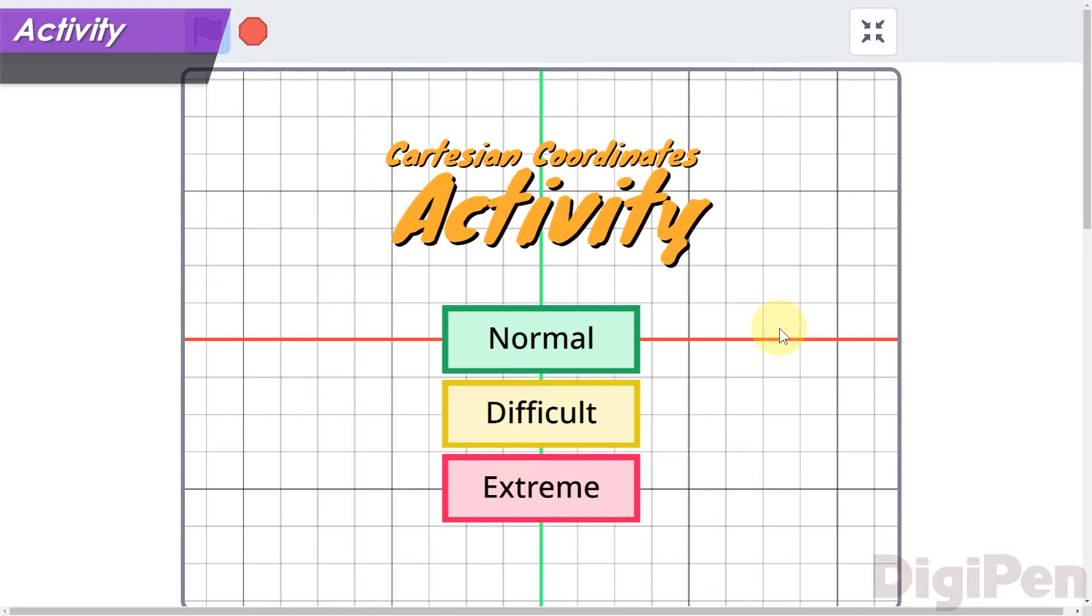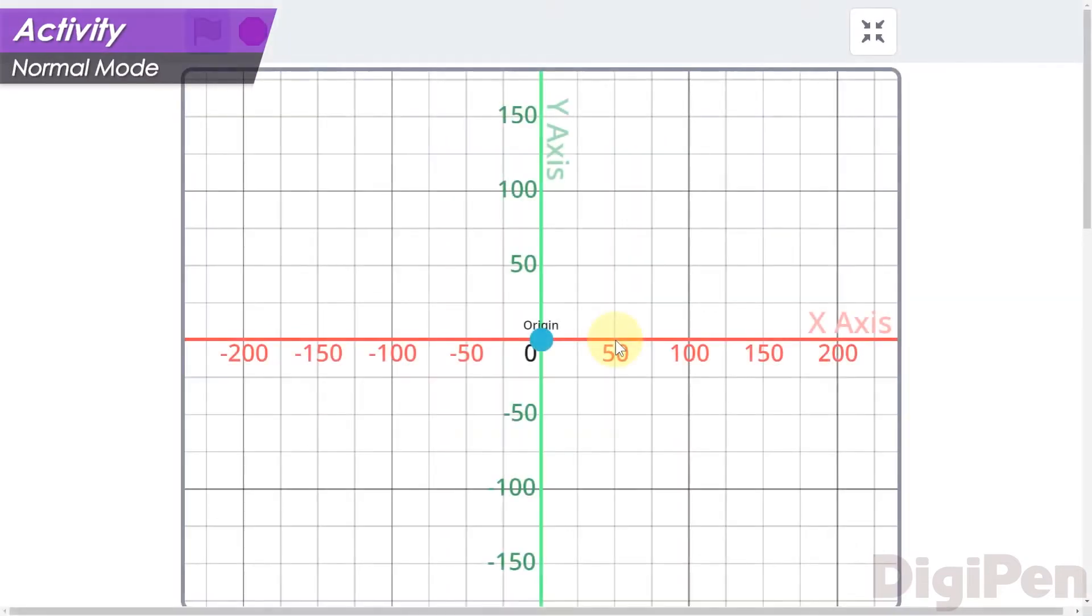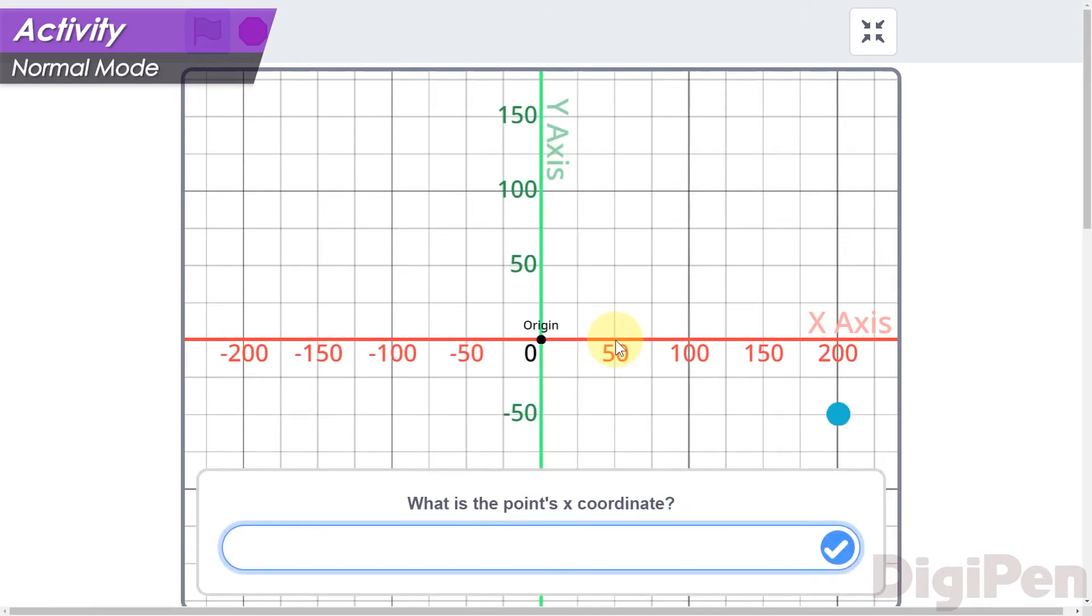First, select your difficulty. Normal is the easiest, difficult is just a bit harder, and extreme is for brave mathematicians who want a tough challenge. We'll start with normal difficulty.